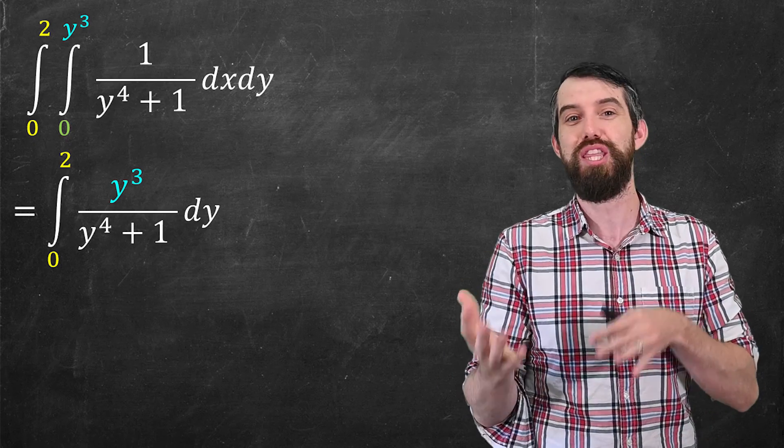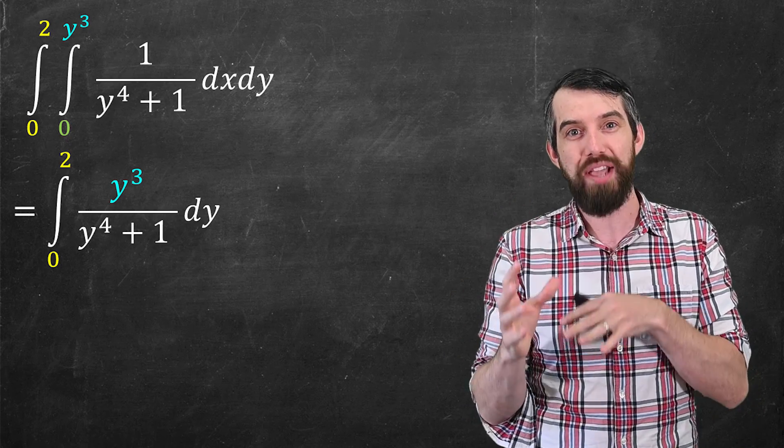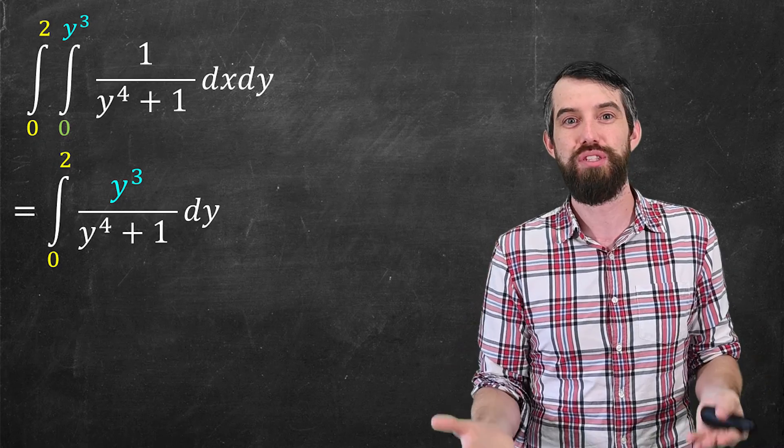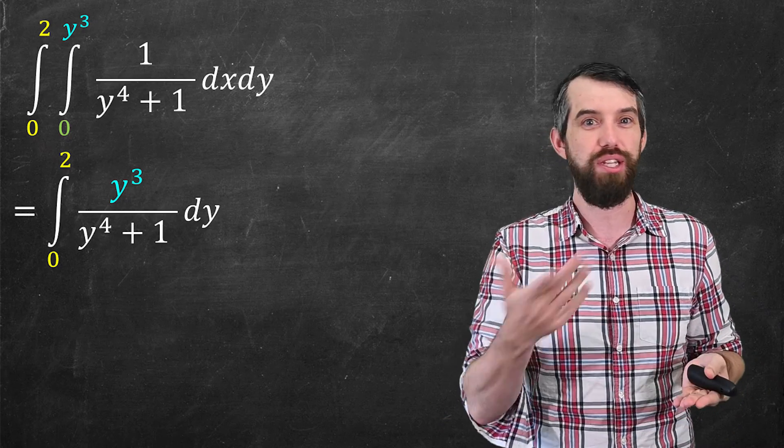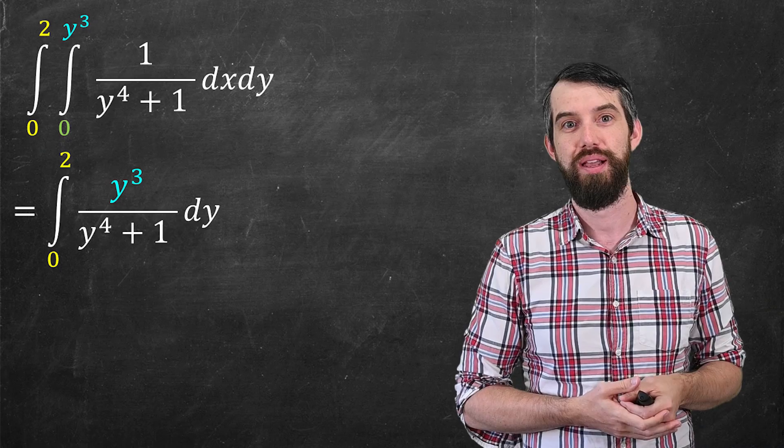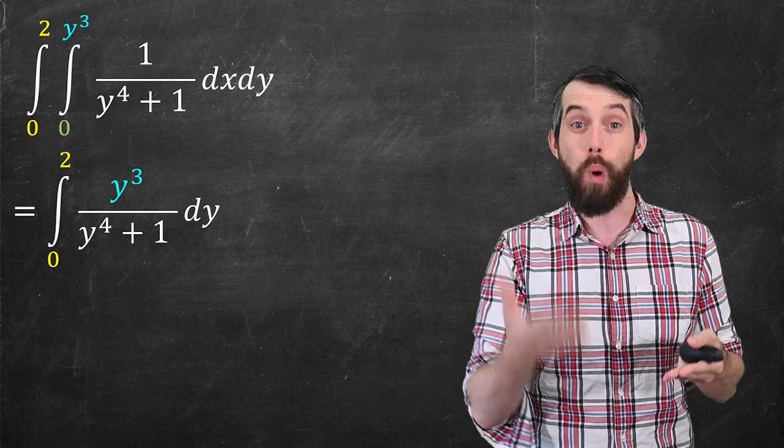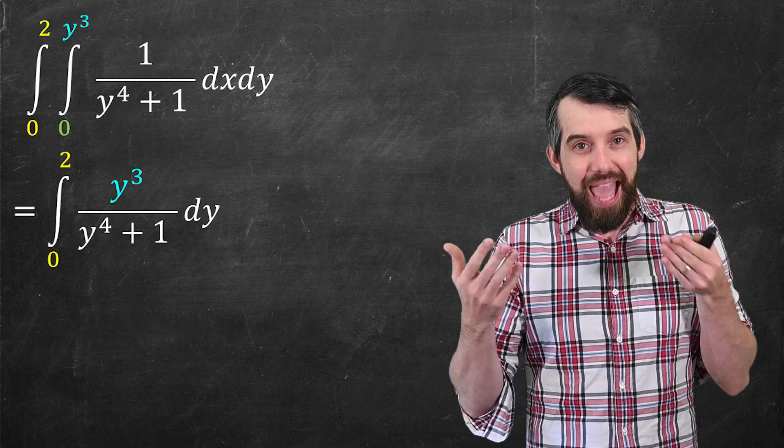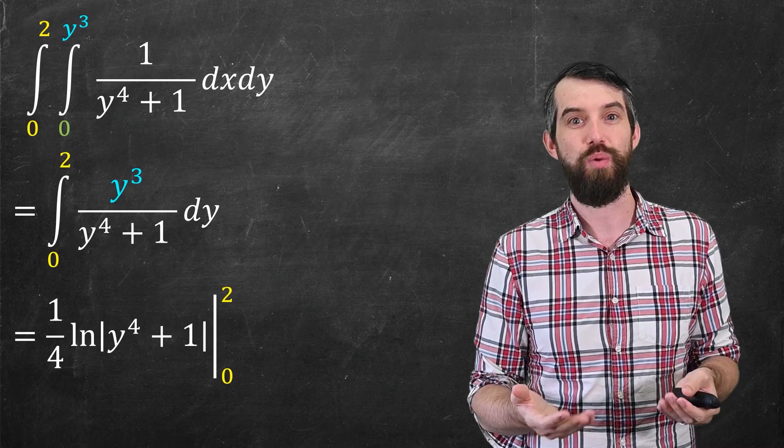Now I've got a y cubed on the top. And that was the thing we didn't have before. We didn't have this y cubed in the integrand, because now I'm just a u-substitution. I can just say u is the denominator, y to the fourth plus one. So du is four y cubed dy. And I have that y cubed there.